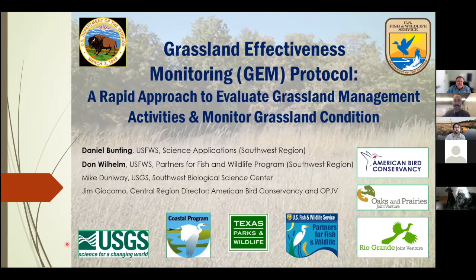Daniel Bunting is a geospatial biologist in the Science Applications Program in the U.S. Fish and Wildlife Service Southwest Region. He has over 20 years of experience in natural resources and conservation, working in both the private sector, environmental consulting, and for the federal government. He has a bachelor's in biology, a PhD in natural resources, and a GIS certificate from the University of Arizona.